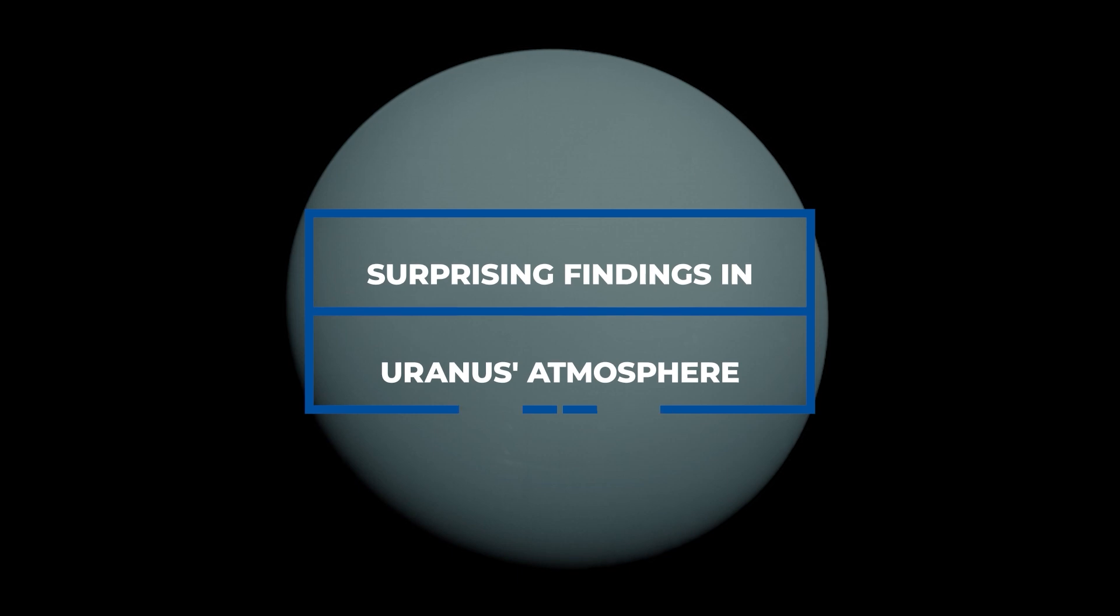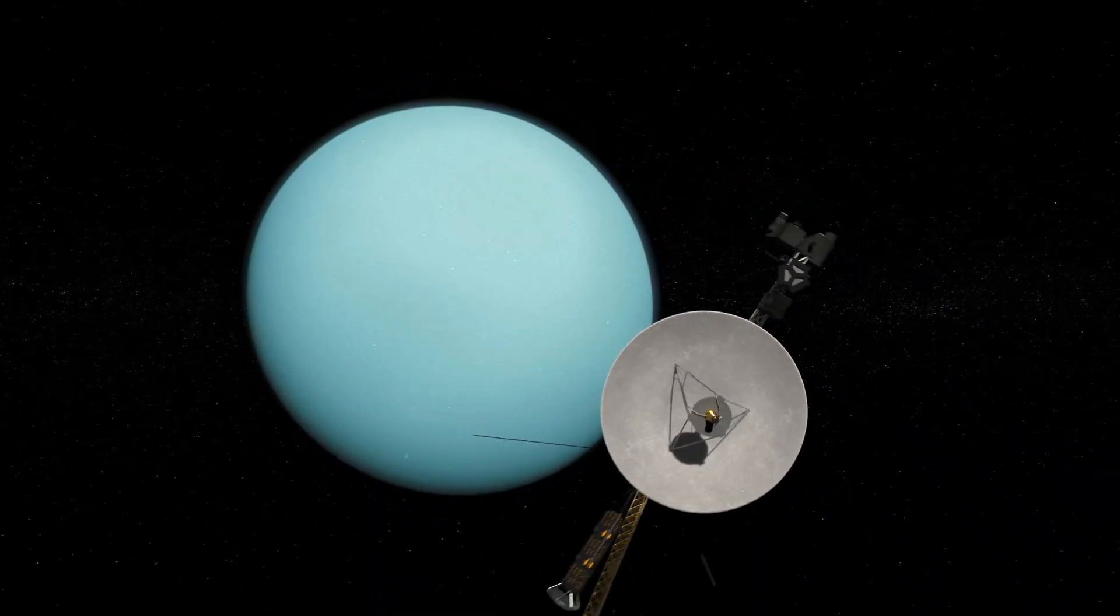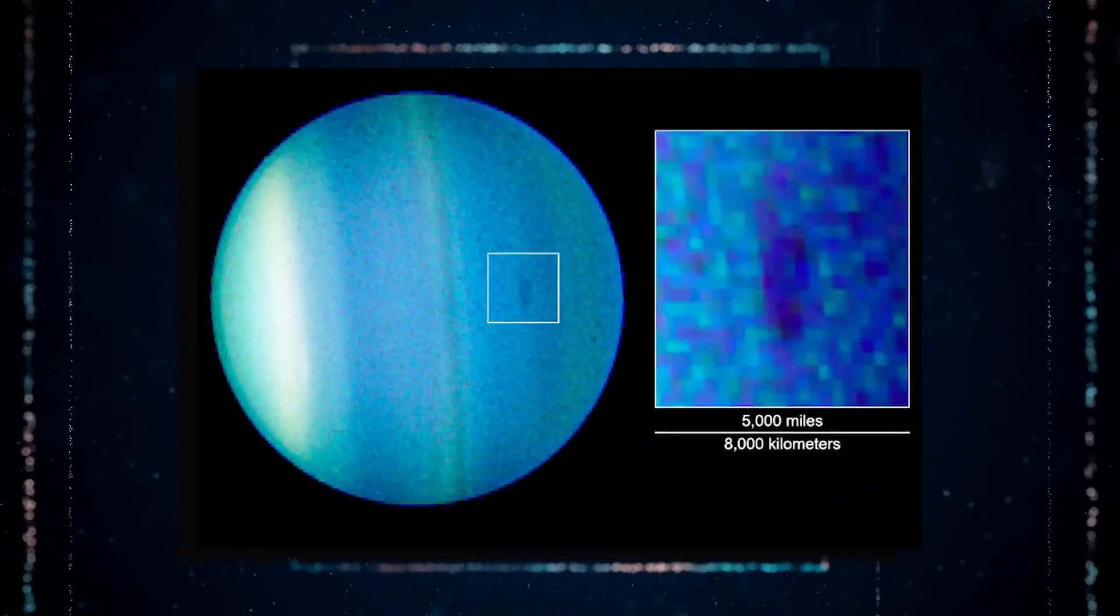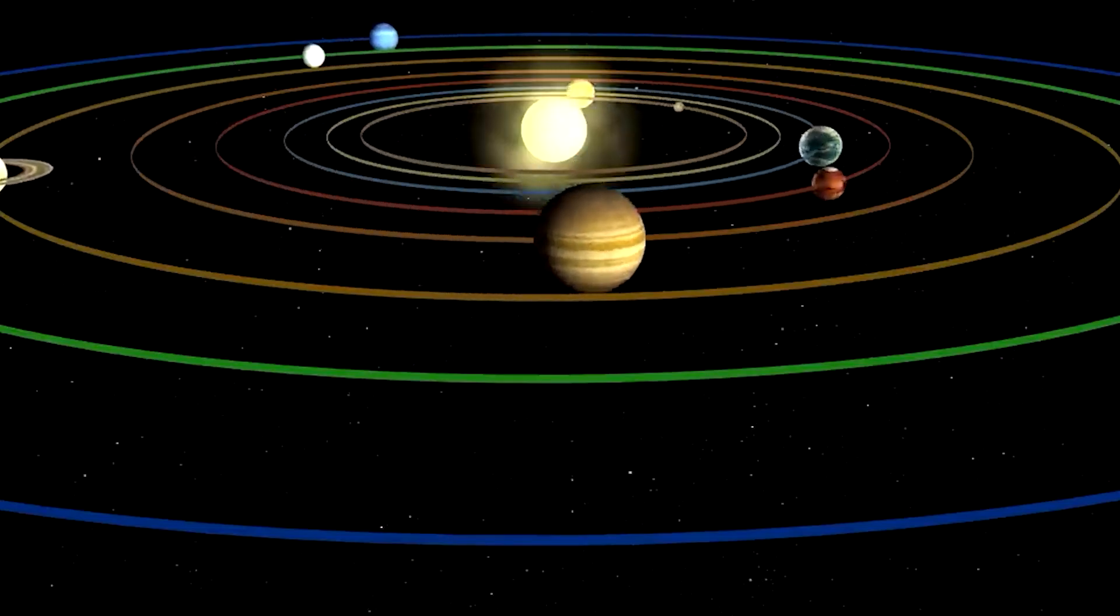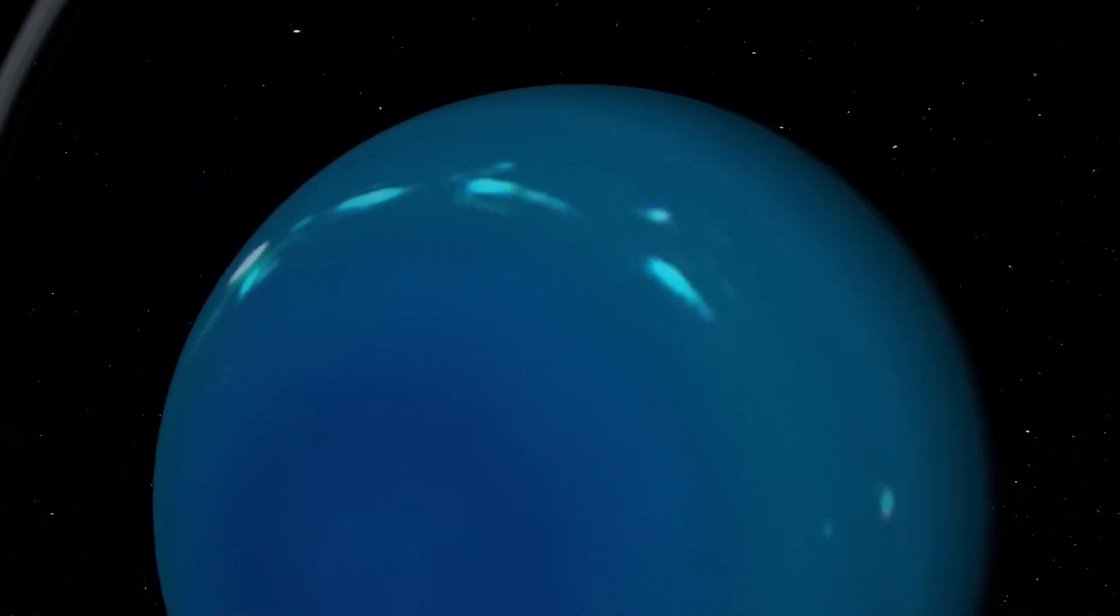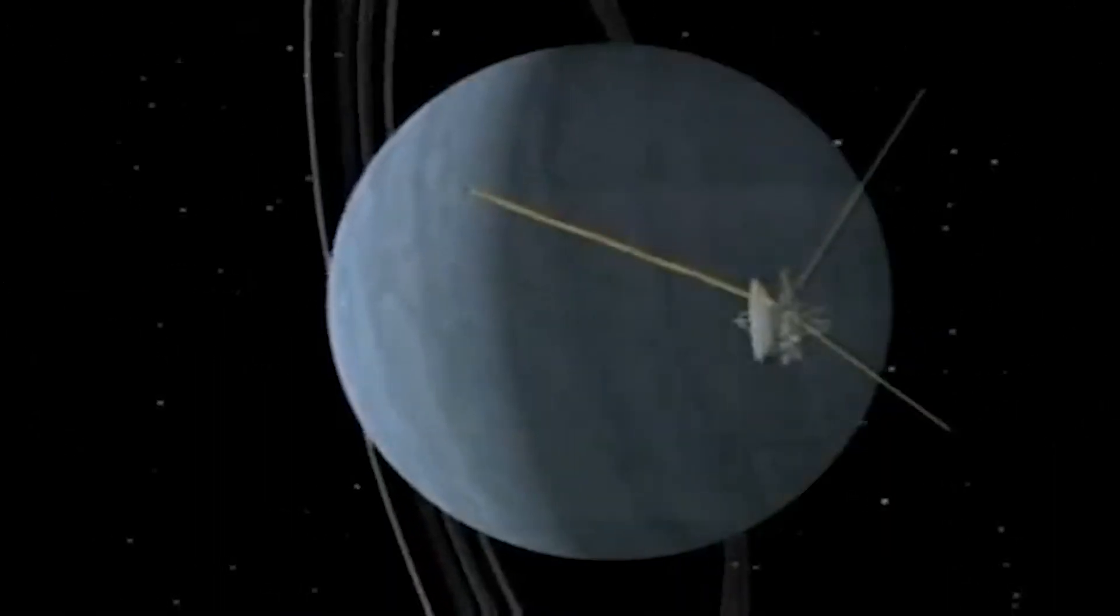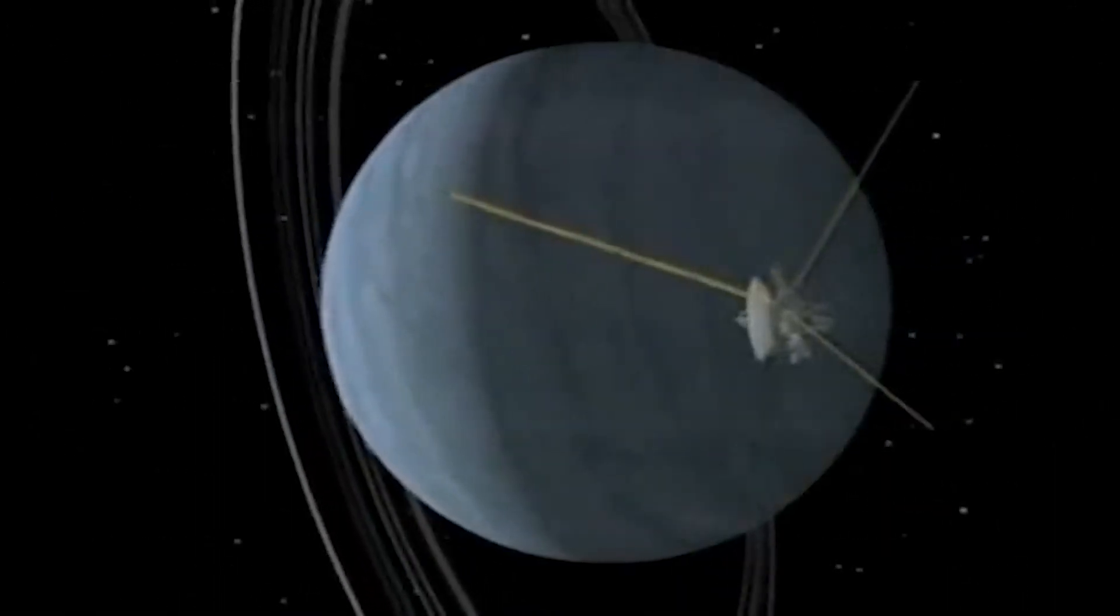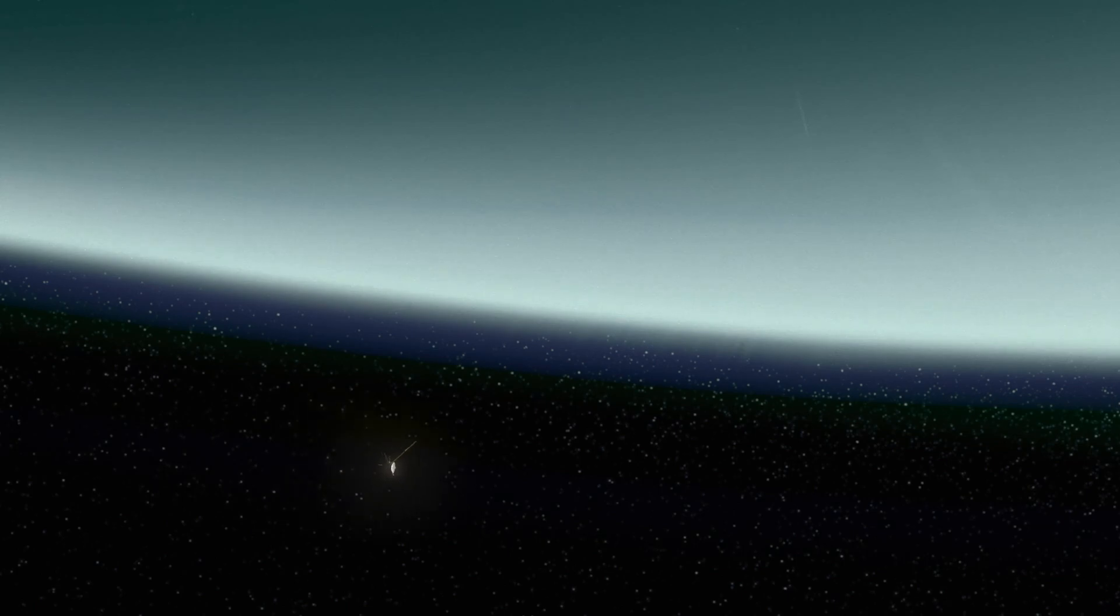Number four, surprising findings in Uranus' atmosphere. The Voyager probe's encounter with Uranus uncovered numerous unforeseen revelations regarding the planet's atmosphere. One of the most astonishing findings was the unusual orientation of Uranus' rotational axis. Unlike the majority of planets in our solar system, Uranus spins tilted on its side, with its axis inclined at an almost 90-degree angle relative to its orbital plane. The observations made by Voyager verified this remarkable tilt and provided valuable insights into how it affects the dynamics of Uranus' atmosphere.